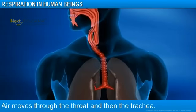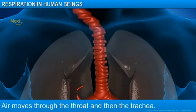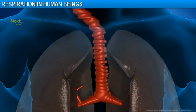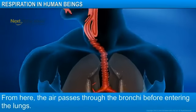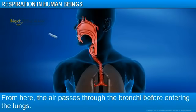Next, the air travels through the throat and then moves through a pipe called trachea. Trachea contains cartilaginous rings that ensure smooth flow of air into the lungs. From here, the air passes through the bronchi before entering the lungs.